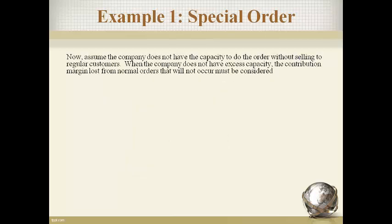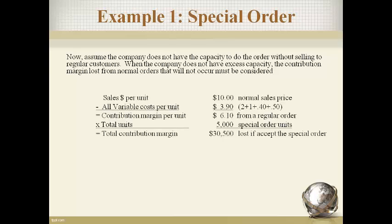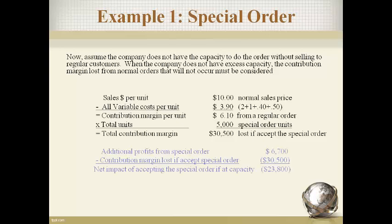Now assume the company does not have the capacity to do the order without selling fewer to regular customers. When the company does not have excess capacity, the contribution margin loss from normal orders that will not occur must be considered. First, compute the contribution from a regular order, including the normal sales price and all normal variable costs. Multiply this by the units in the special order that will not be sold to regular customers — this is the contribution margin lost. The company will lose more than it gains, and the special order should not be accepted if the company is already producing at capacity.